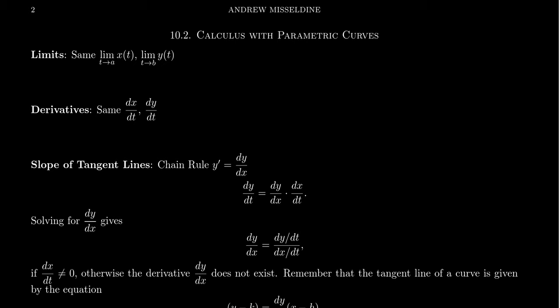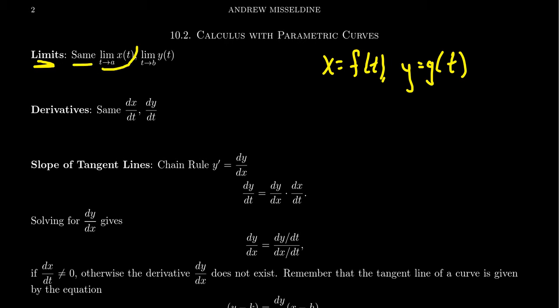We're talking about limits, derivatives, integrals — the whole shebang. How does one do calculus with parametric curves? It turns out that for limits, there's really not a whole lot that's going to be going on. Our curve is given by x equals f of t and y equals g of t — these are our parametric equations. Calculation of limits is going to be basically the exact same thing we saw in Calculus 1. We can calculate the limit of x as t approaches some value a, and the limit of y as t approaches b.